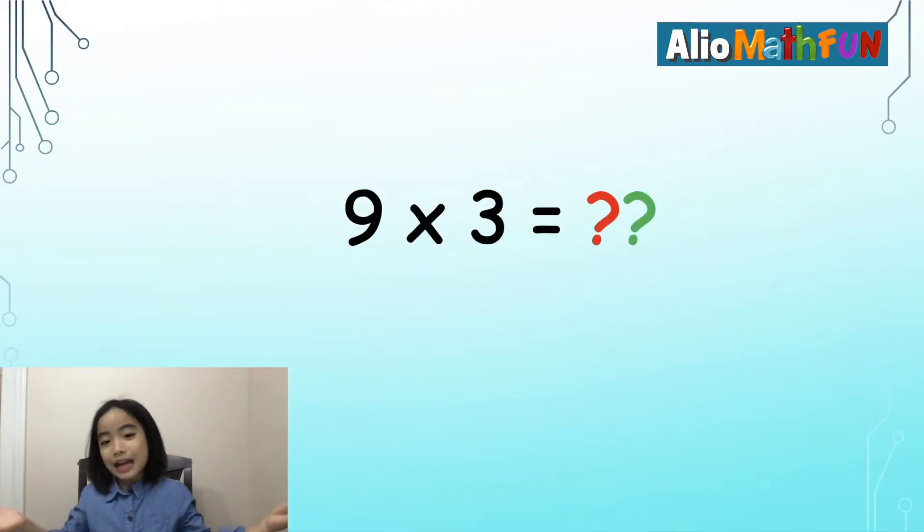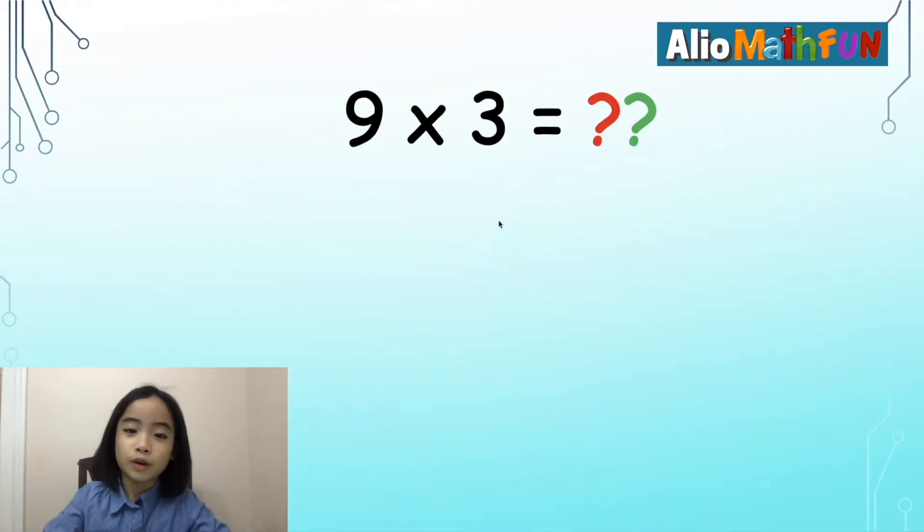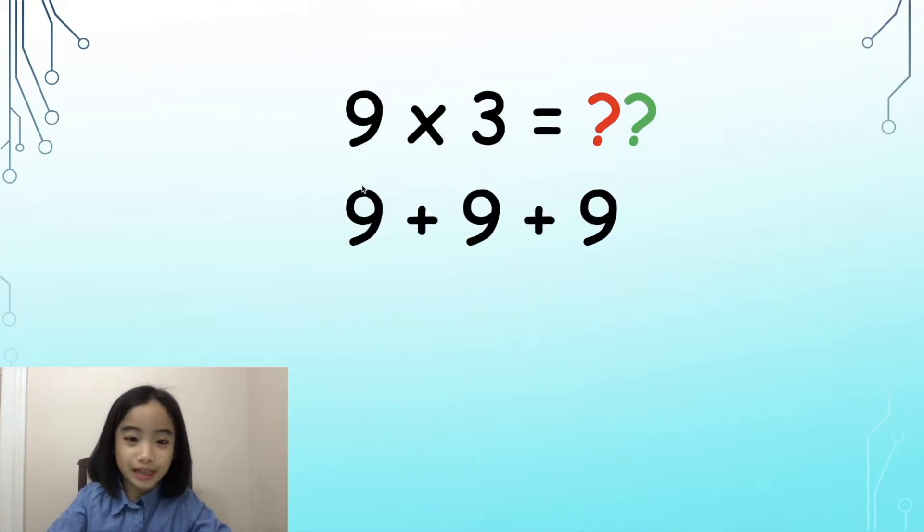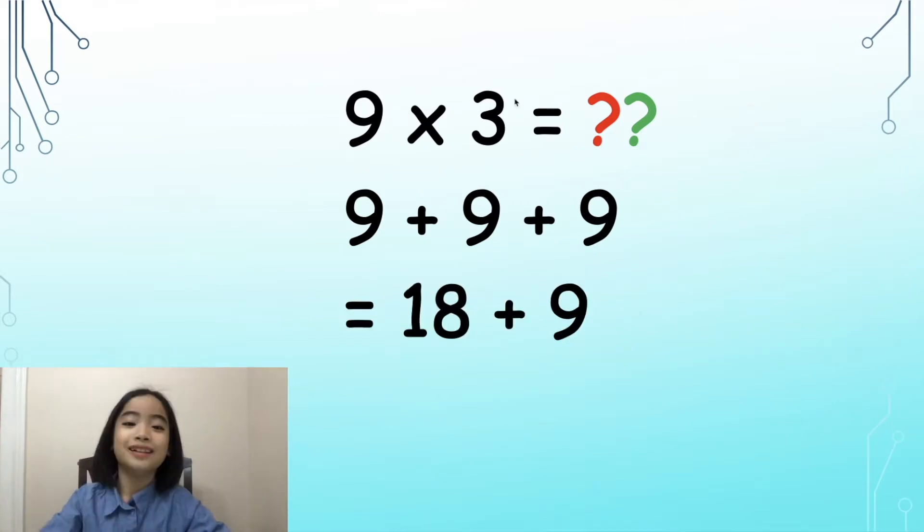So, what is 9 times 3? Well, 9 times 3 is the same thing as 9 plus 9 plus 9. There are three 9s all added together. 9 plus 9 equals 18. 18 plus 9 equals 27.